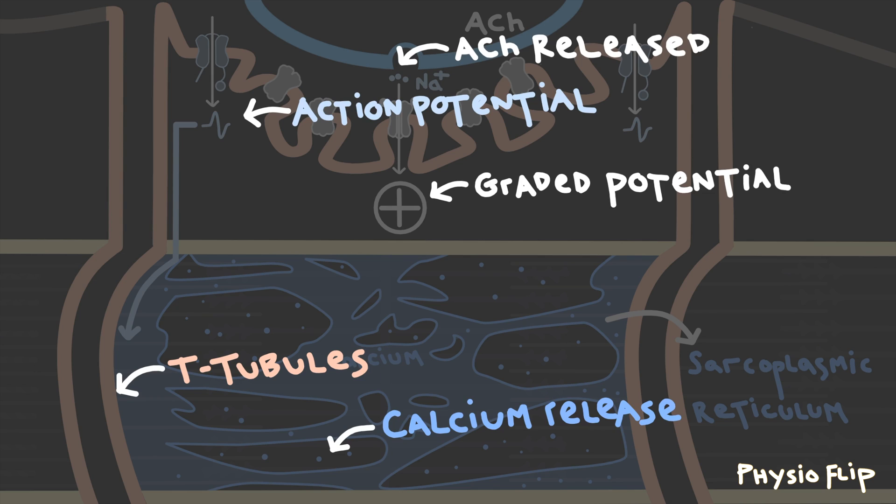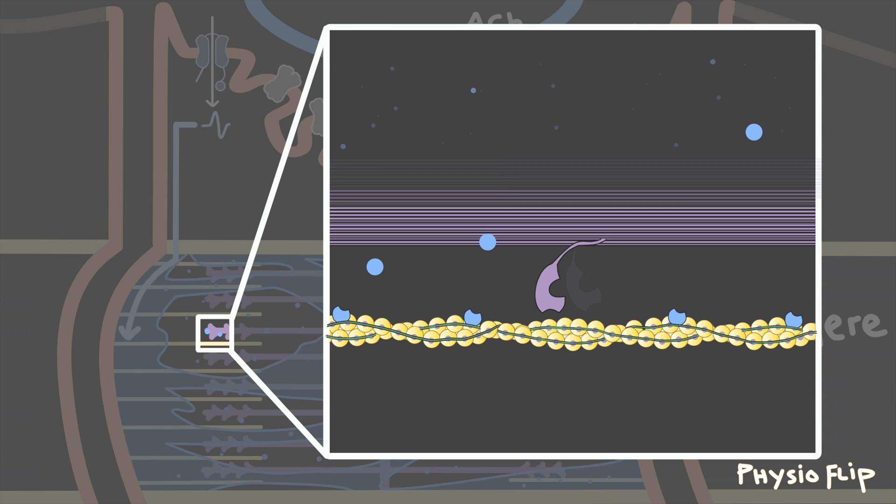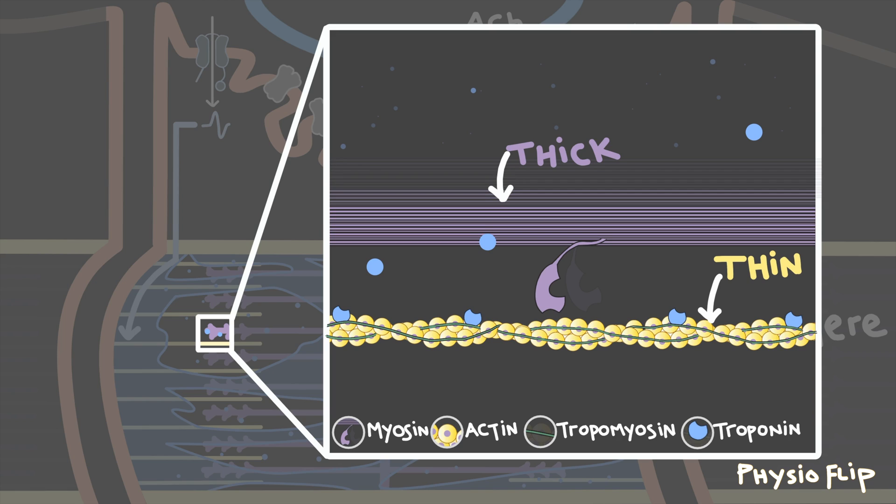Okay, we're getting close, but we still don't have contraction or force. We're almost there, I promise. To see how force is generated due to this calcium being released, let's zoom in onto a small section of this sarcomere. In this sarcomere, we can see a variety of different proteins. Here we have the thick filament, composed mainly of the protein myosin, and the thin filament, composed mainly of the protein actin. Along the thin filament, we also have a couple other proteins, including tropomyosin and troponin. These four proteins together will help control if or how much force this muscle fiber's sarcomere can generate.